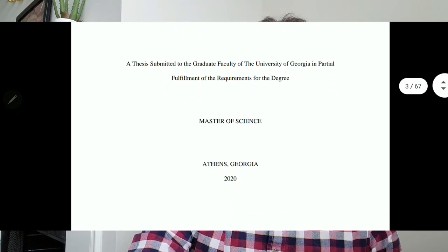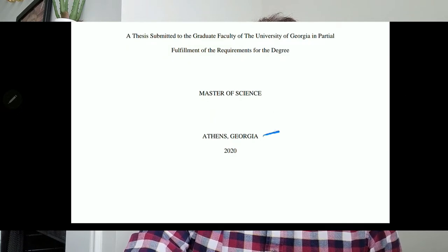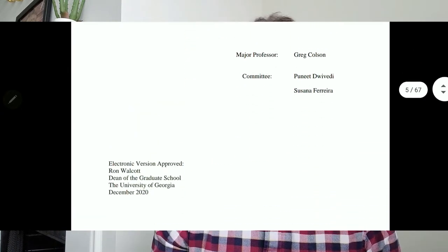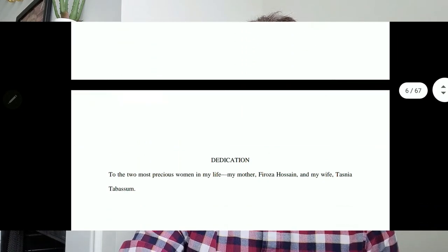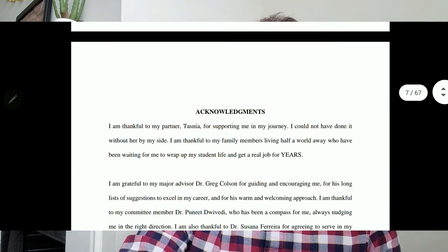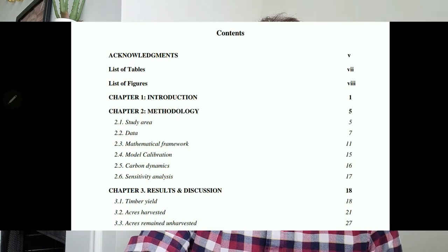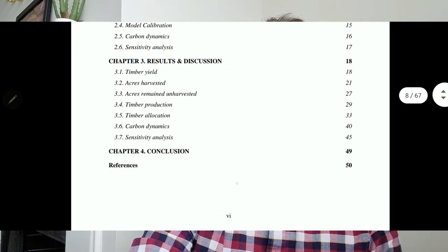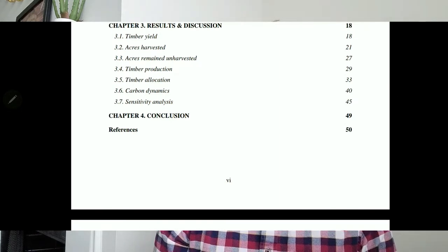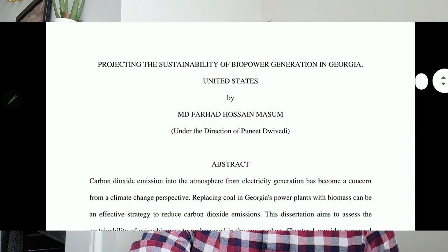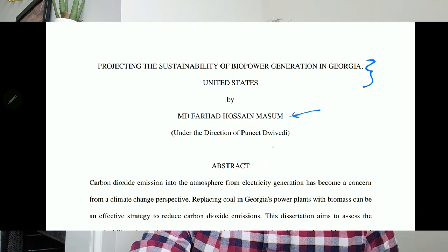I was in Athens, Georgia in 2020. The thesis structure is given by the university, so you follow it — there's a dedication page, acknowledgements, and a table of contents. The structure mirrors a journal article: introduction, methodology, results and discussion, conclusion, and references. That is how a thesis generally looks.